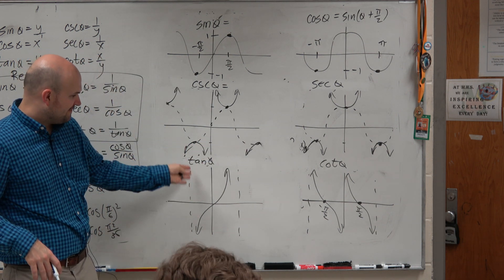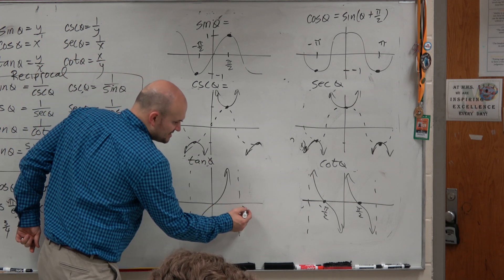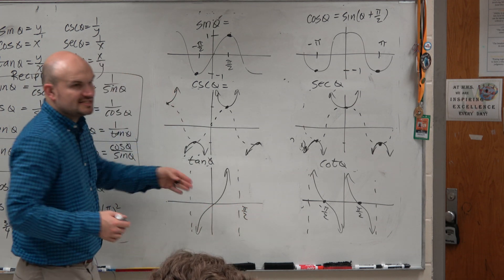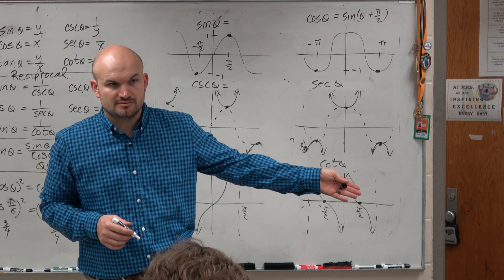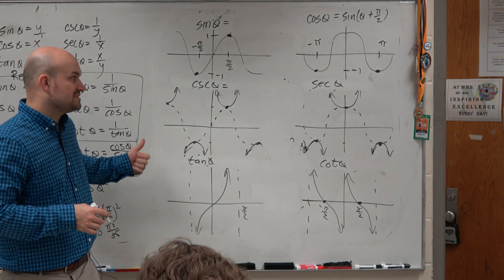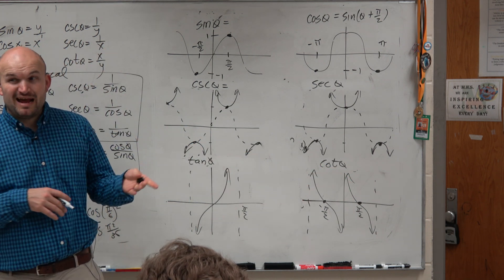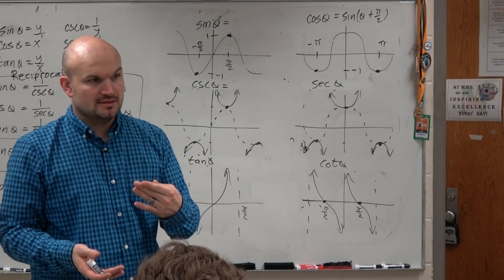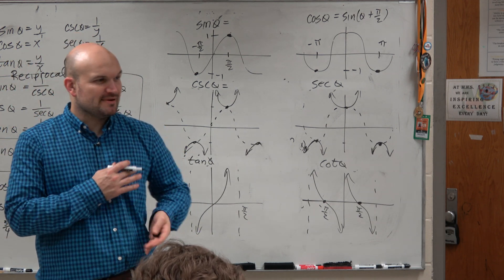You guys realize that if I took tangent and I shifted this to pi halves, it still wouldn't be cotangent though, right? Or if I shifted it to the left, it still wouldn't be cotangent. So therefore, I have to reflect it, right? It has to be reflected.